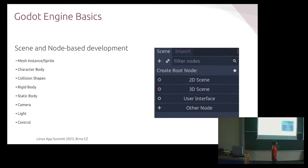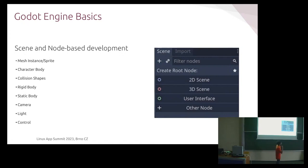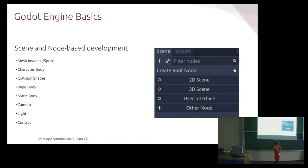A little bit on the basics: it's a scene and node-based development. You can create an asset as a scene — for example an enemy, a Goomba — place all the nodes you require there, and then instance it as many times as you need in a different scene. The most common node types include: mesh instance or sprite for how your asset looks; character body, which can be controlled by input; collision shapes that define how objects interact in the scene; rigid bodies that follow the laws of physics; static bodies for objects that won't move, like floors; camera for rendering and character view; lights to illuminate the scene; and control nodes for UI elements like progress bars, health bars, or coin counters.